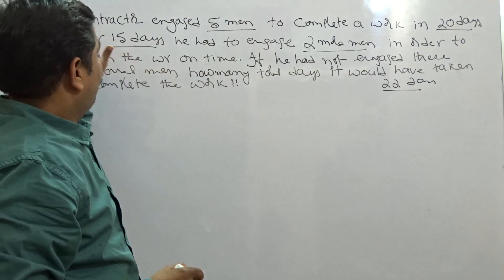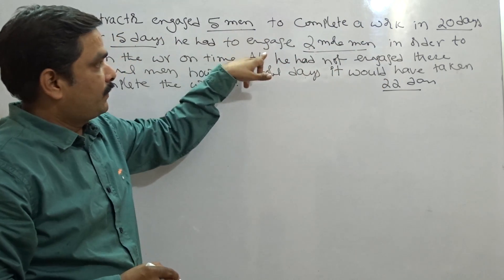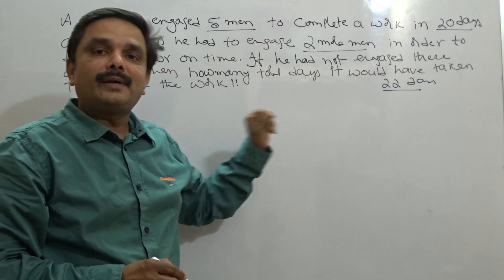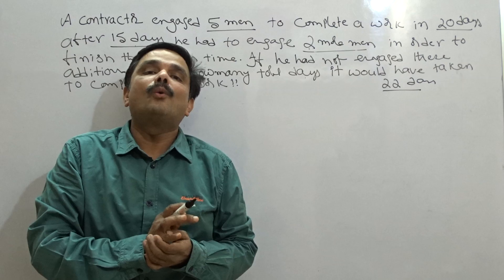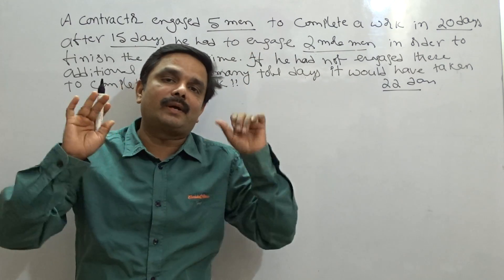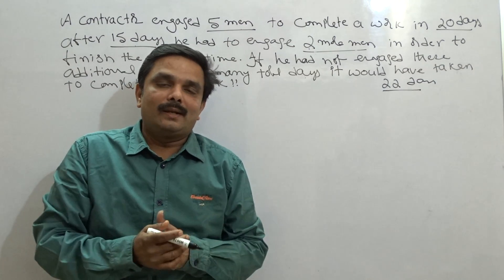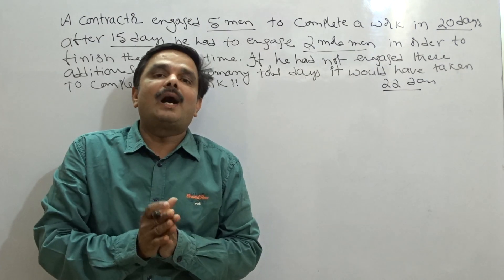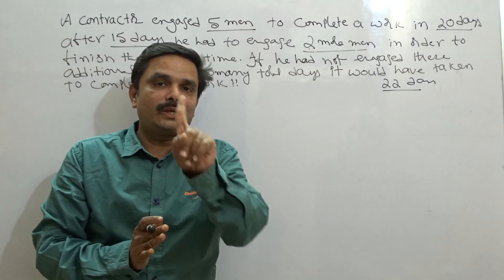What's the question actually? A contractor engaged 5 men to complete the work in 20 days. But after 15 days, he had to engage 2 more men in order to finish the work on time. If these 2 additional men are not engaged, how many days would it have taken for the initial 5 men to complete the work? Now, let us do this question in 2 ways as usual. The first is the conventional way using pure mathematics, and after that I will give you a fantastic shortcut with which you can do the question in just 1 step.